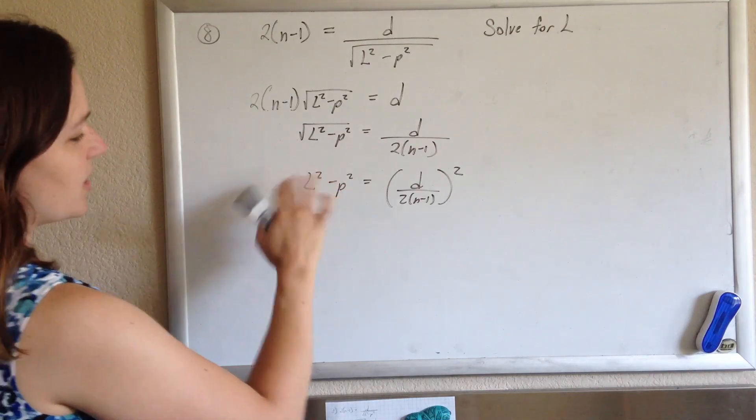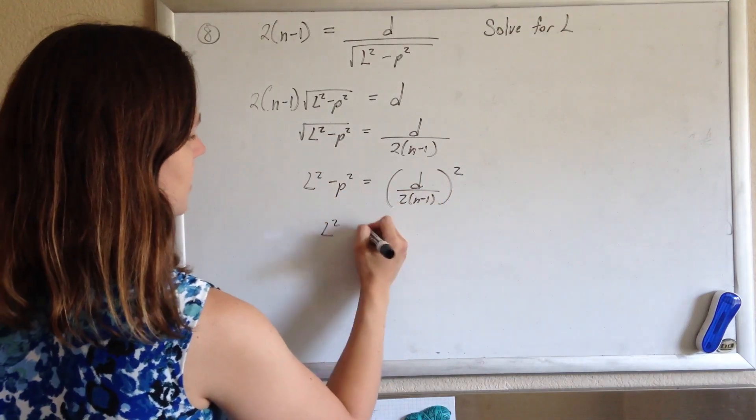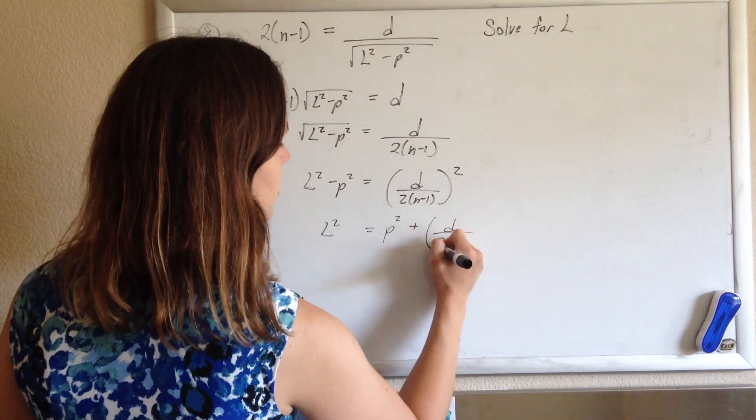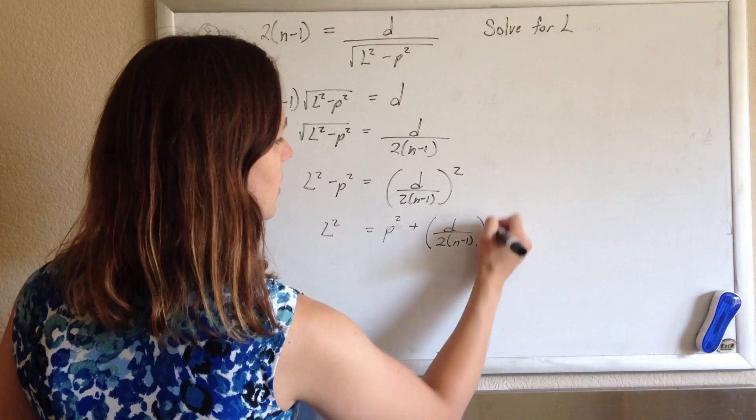I'll undo the subtraction by adding to both sides. So I'll get L squared equals P squared plus D over 2 times n minus 1 quantity squared.